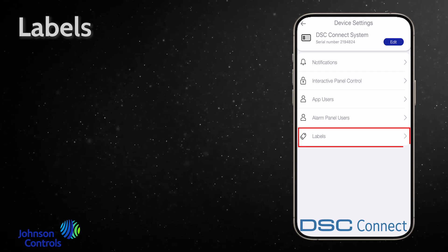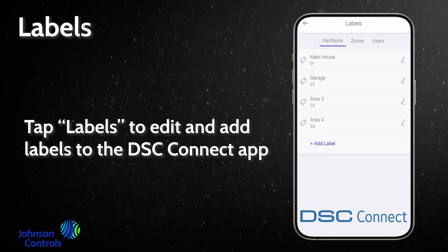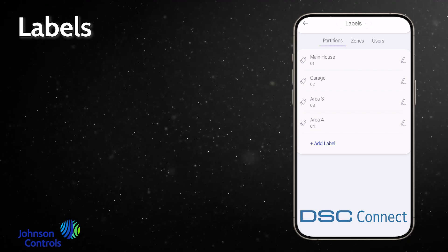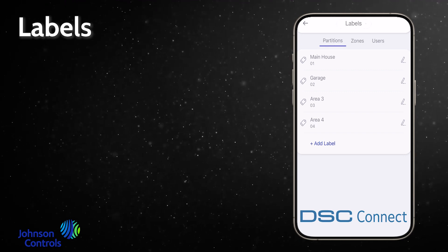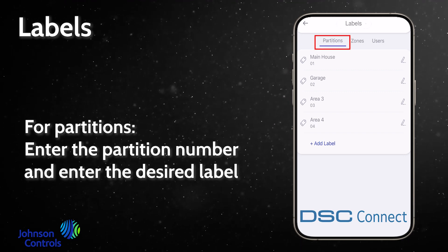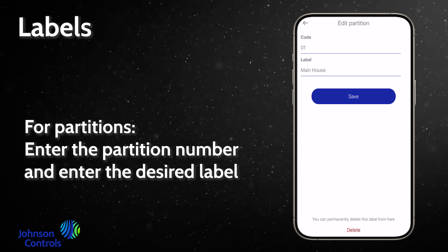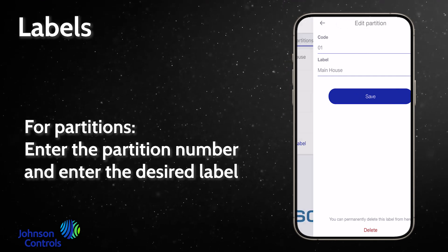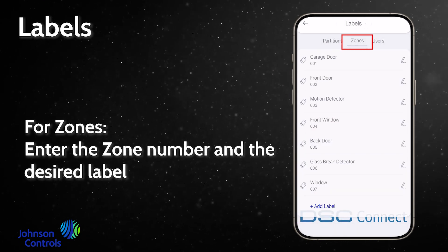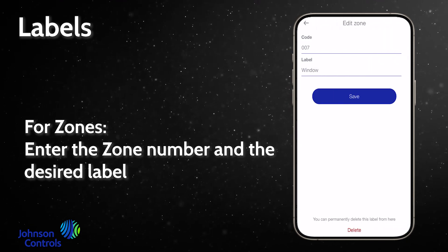Tap labels to edit and add labels to the DSC Connect app. For partitions, enter the partition number and enter the desired label. For zones, enter the zone number and the desired label.